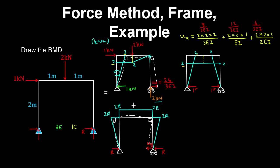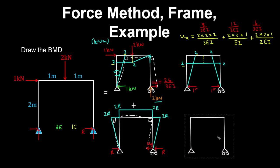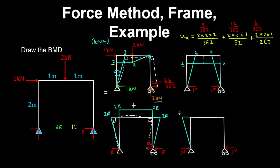Now to obtain UB, we draw the virtual bending moment diagram by applying our virtual unit load in the direction of the deflection. This gives a virtual reaction on the other side of one. Therefore the virtual bending moment diagram looks the same as the real one, except the magnitude of the virtual moment is two — because we have the virtual unit load by the moment arm of two meters. Therefore UB is equal to the volume between the real and virtual bending moment diagrams.